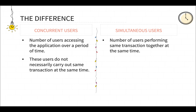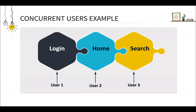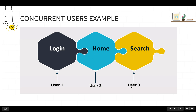If you understand this difference with a picture — this is the example of concurrent users. User 1 is performing the login operation at one particular moment of time; at the same time user 2 is on the home page; and at the same time user 3 is carrying out the search operation. So all these users are doing operations at the exact same time but on different functionalities — these are the concurrent users.